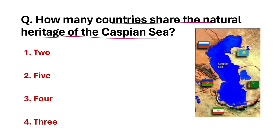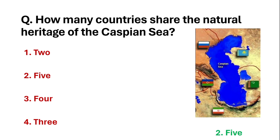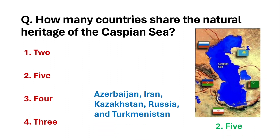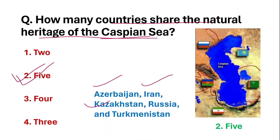How many countries share the natural heritage of the Caspian Sea? The answer is 5 countries. Those 5 countries are: Azerbaijan, Iran, Kazakhstan, Russia, and Turkmenistan. These 5 countries share the natural heritage of the Caspian Sea.